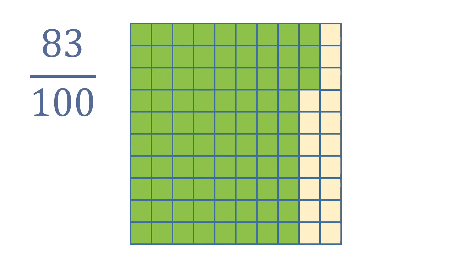One more example. We have eight columns shaded, that makes it 80 in all. And we still have three extra shaded parts. So a total of eighty-three out of one-hundredth — that's eighty-three hundredths. In decimal, it's 0.83, which is also read as eighty-three hundredths.